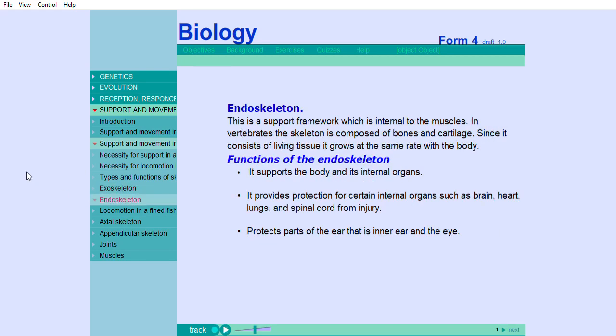Endoskeleton: This is a support framework which is internal to the muscles. In vertebrates, the skeleton is composed of bones and cartilage. Since it consists of living tissue, it grows at the same rate with the body.